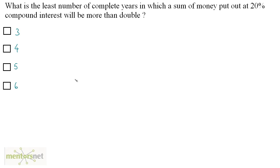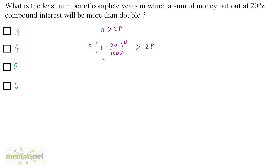What is the least number of complete years in which a sum of money put out at 20% compound interest will be more than double? The question says the amount should be more than twice the principal. The formula for amount is P into 1 plus 20 by 100, raised to n, and this should be greater than 2P. The P's cancel out, giving 120 by 100 raised to n greater than 2, which is 1.2 raised to n greater than 2.